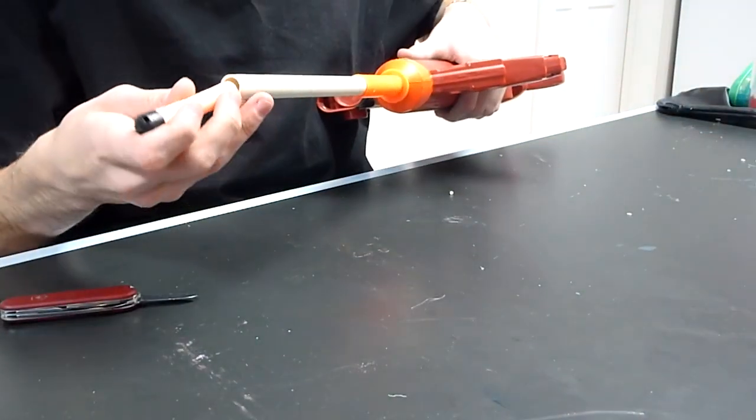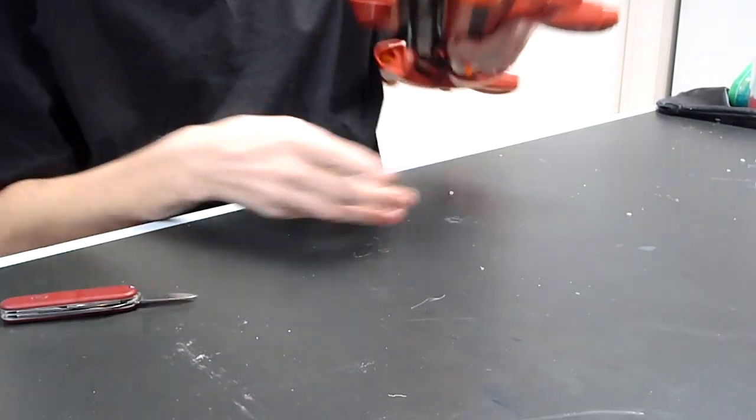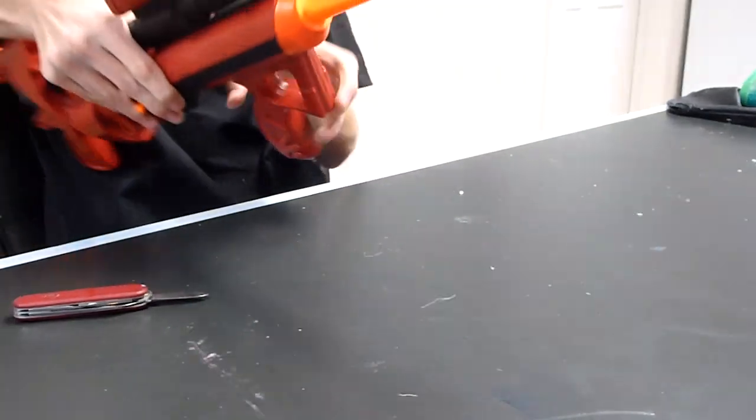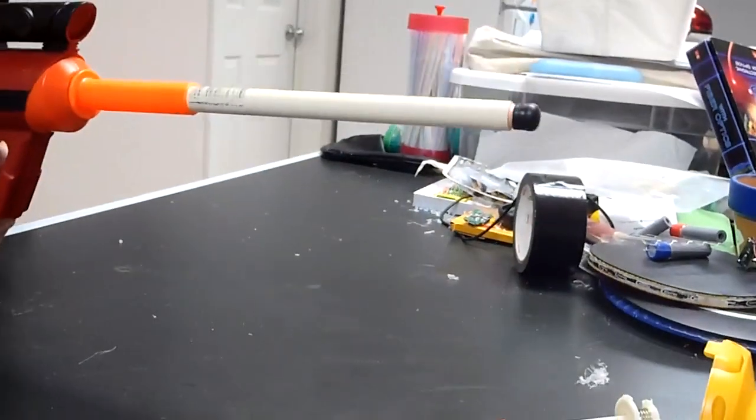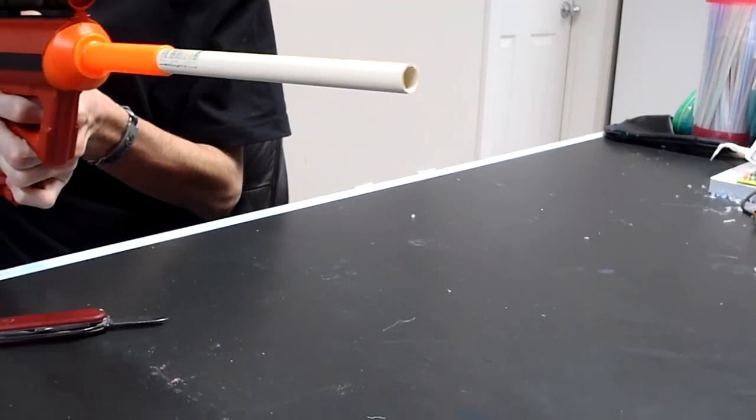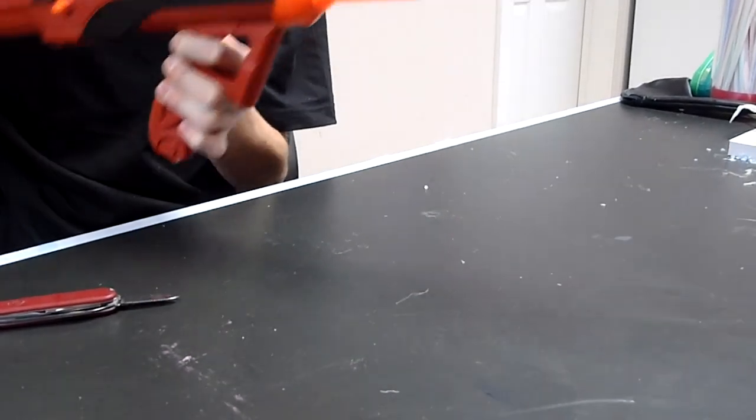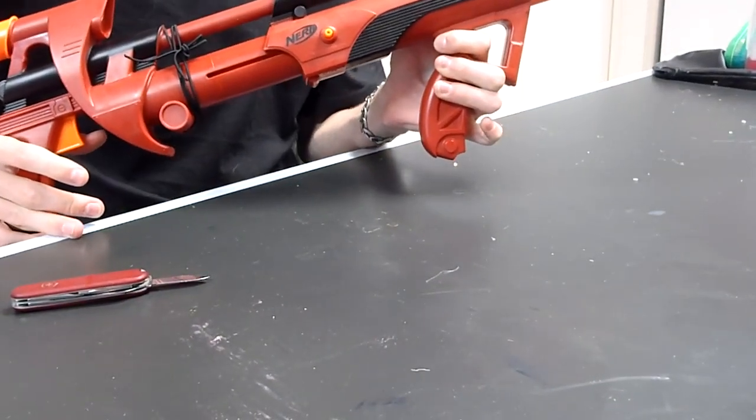Just to do a quick test, you're going to put that in there. I'm getting a ton of range with that. So that's your two basic mods for the Big Bad Bow. Thanks for watching.